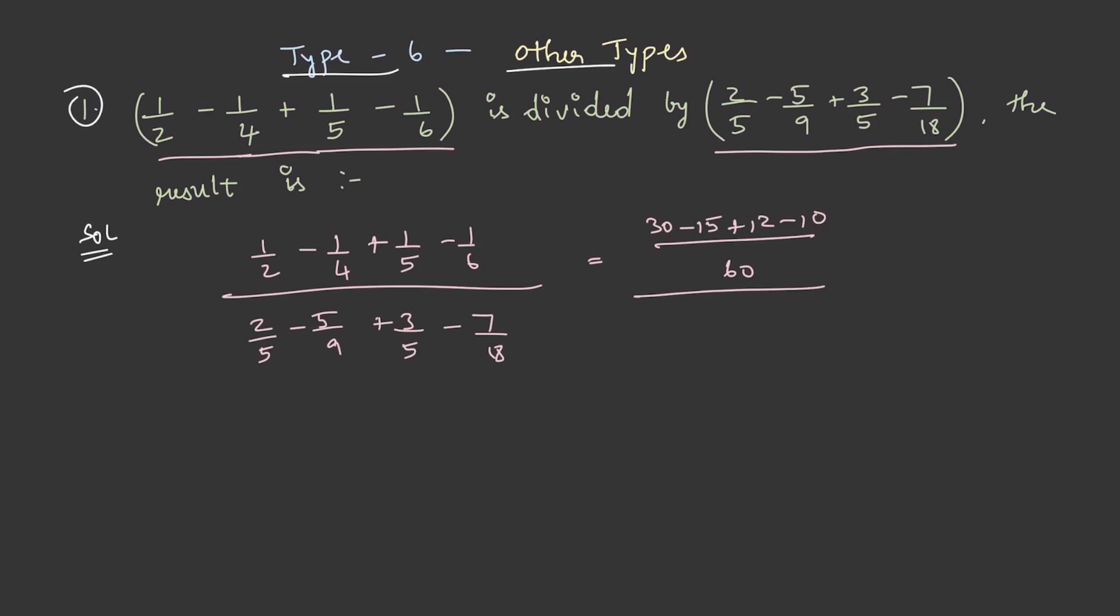In the denominator, let us bring these two terms together. So, 2 by 5 plus 3 by 5 minus 5 by 9 plus 7 by 18, and this value becomes 17 by 60 divided by 1 minus 17 by 18.